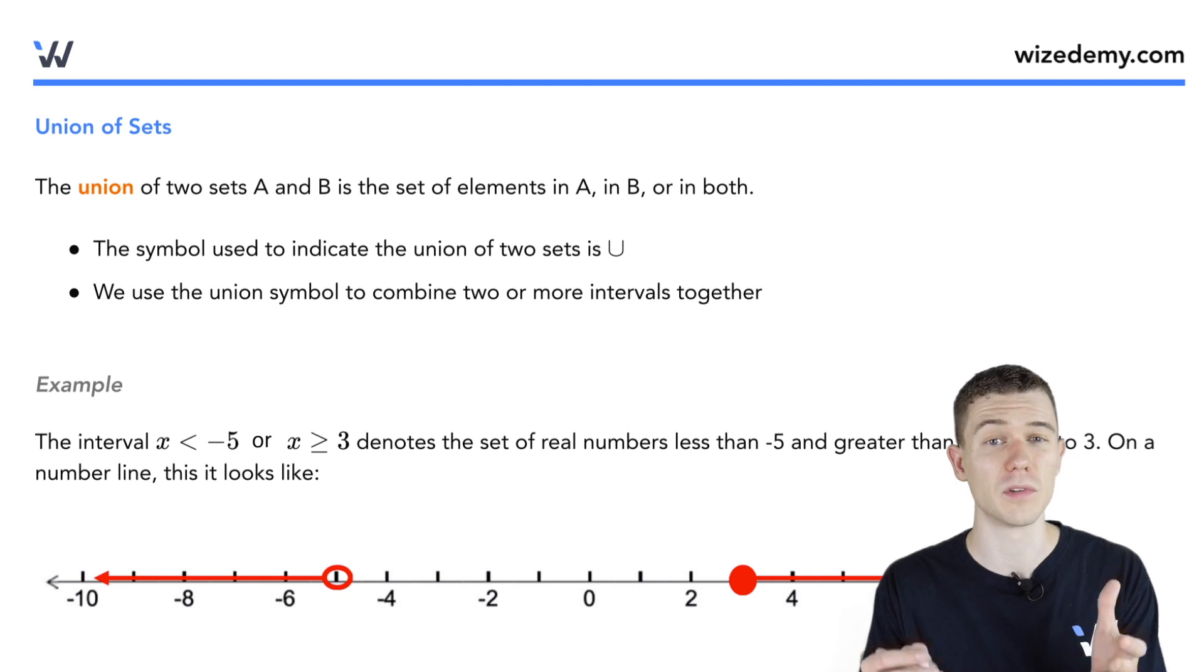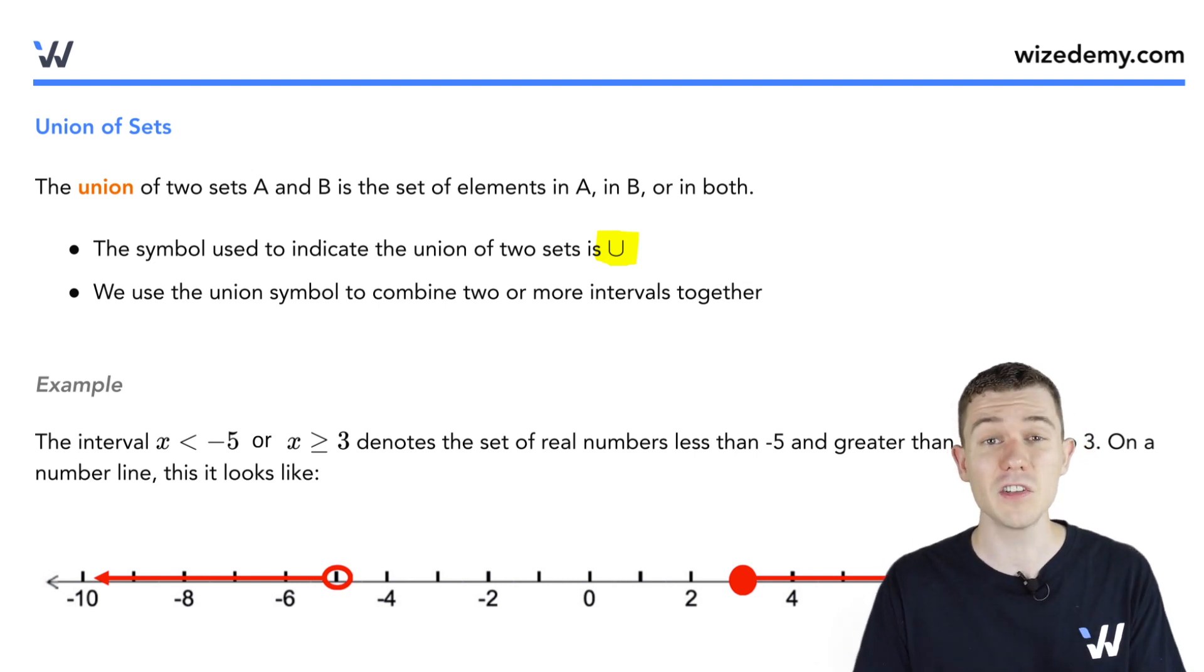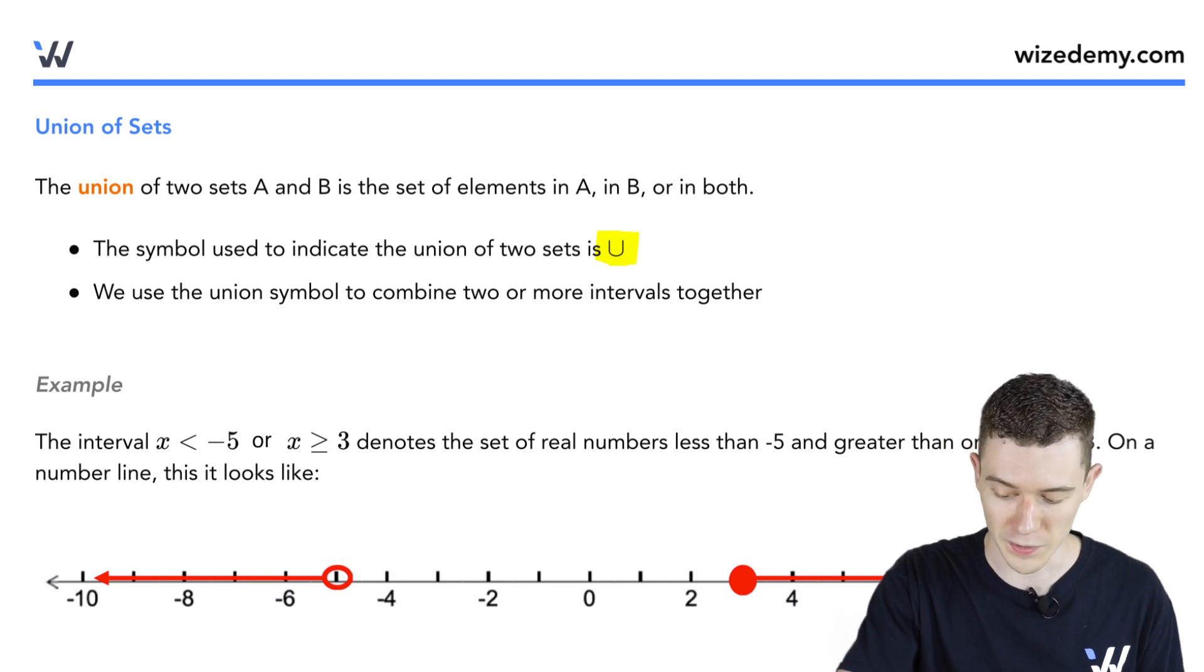We can even group intervals together using this union. This symbol right here, this U, stands for union. And it describes all the elements of an interval that's in one interval, the other interval, or both of them. This is when you want to describe two different intervals together. We use this notation.